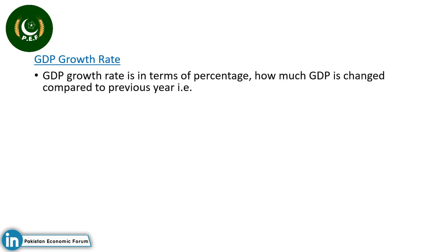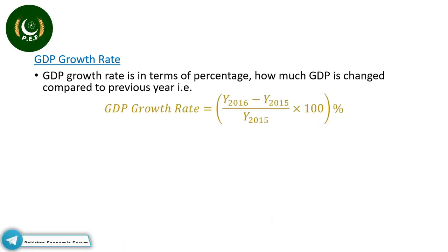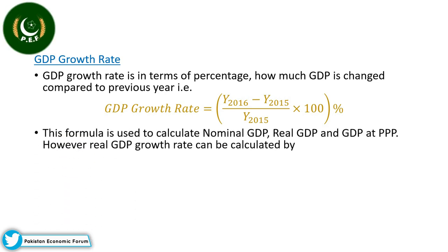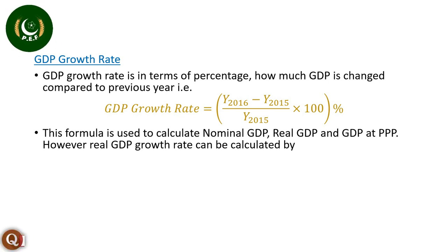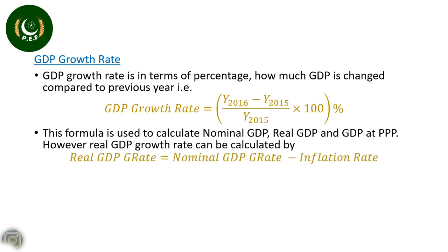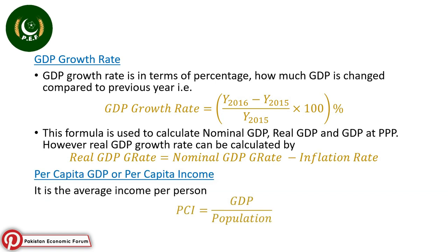Next is GDP growth rate. GDP growth rate in percentage measures how much GDP has changed compared to the previous year. This formula is used to calculate nominal GDP growth rate, real GDP growth rate, or GDP growth rate when GDP is measured at purchasing power parity. However, real GDP growth rate can also be calculated by subtracting the inflation rate from the nominal GDP growth rate. Per capita GDP, or per capita income, is the average income per person of an economy.